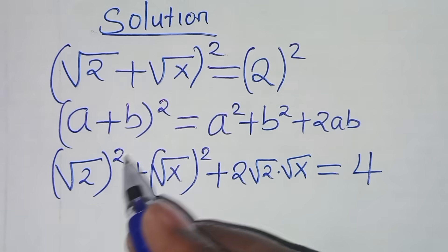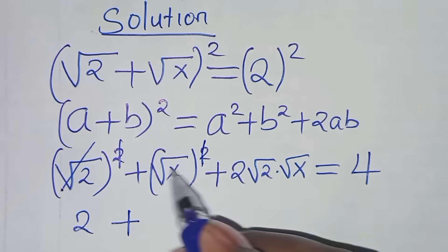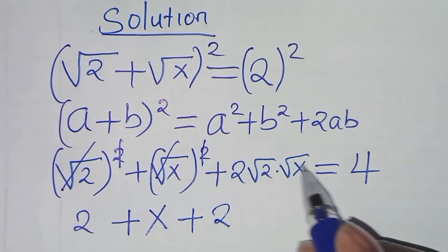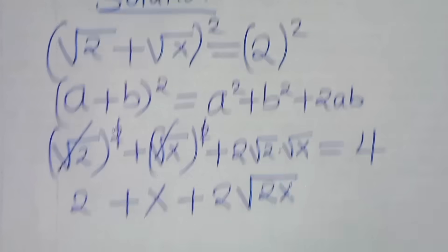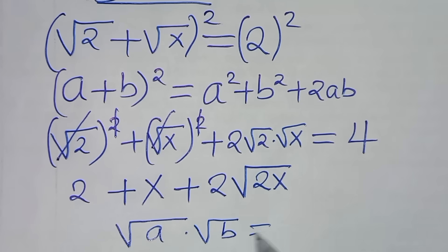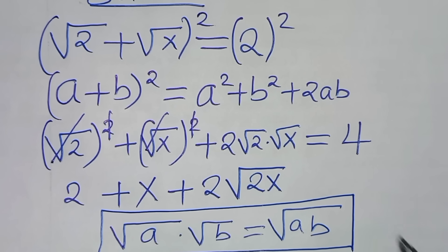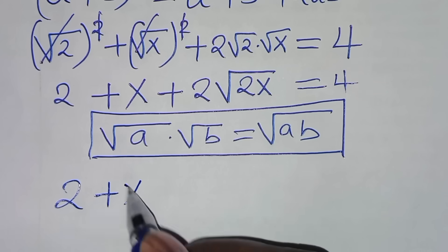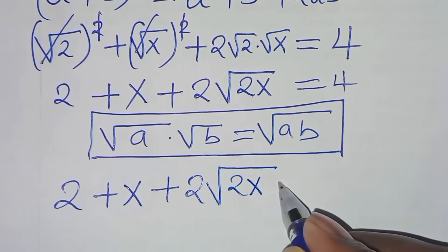Now, square root of 2 squared eliminates the square root sign to give 2, and square root of x squared gives x. Then 2 times square root of 2 times square root of x is the same as 2 times square root of 2x, since square root of a times square root of b equals square root of ab. So we have 2 plus x plus 2 square root of 2x equals 4.